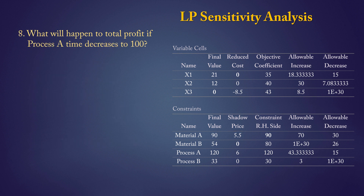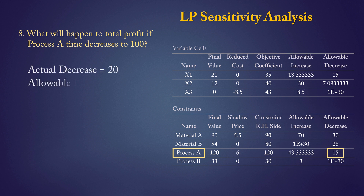Question 8: what will happen to total profit if process A time decreases to 100 minutes? The current available time for process A is 120 minutes, so decreasing to 100 implies an actual decrease of 20 minutes. The allowable decrease is only 15. Since the actual decrease of 20 exceeds the allowable decrease, the shadow price no longer applies and we cannot determine the impact from this output. The problem needs to be re-solved to reflect the changes.